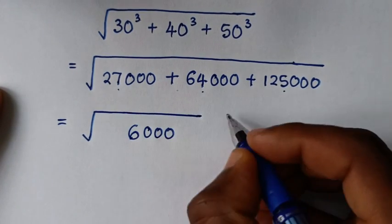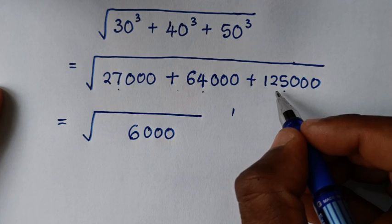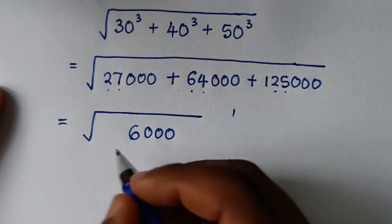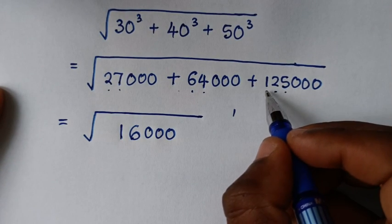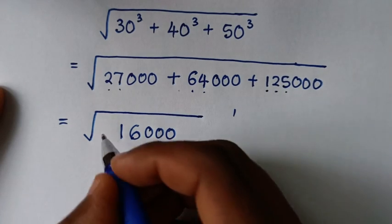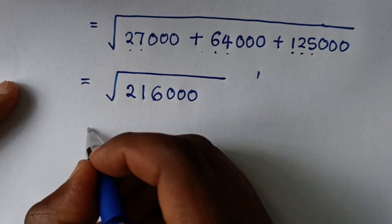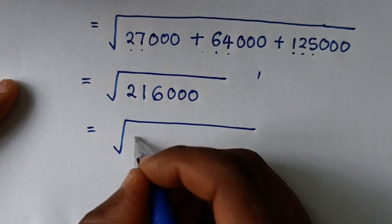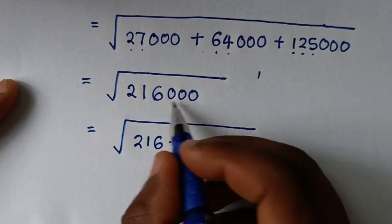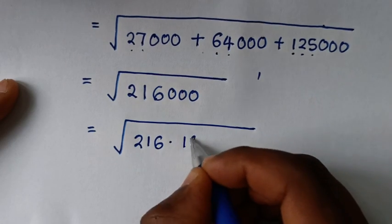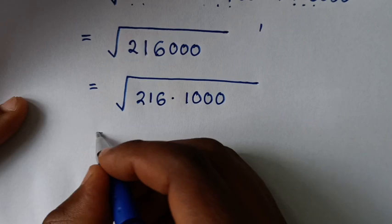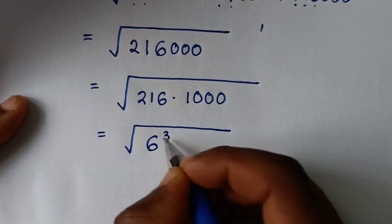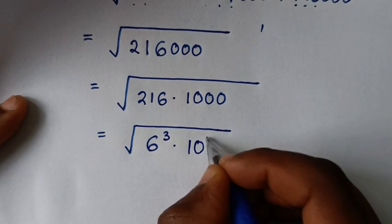9 plus 7 is 16, carry 1. The fifth digit: 2 plus 6 is 8, 8 plus 2 is 10, 10 plus 1 is 11, carry 1. The sixth digit: 1 plus 1 is 2. So the total is 216,000. That is 216 times 1000.